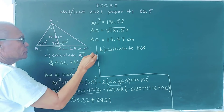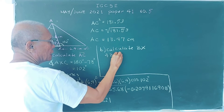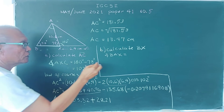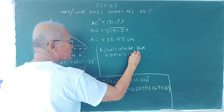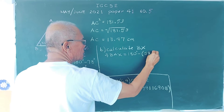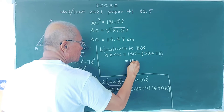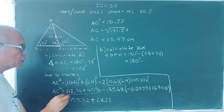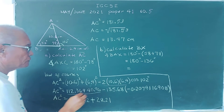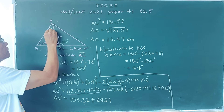To solve for angle BAX, we use the angle sum of a triangle. The angles in triangle ABX sum to 180 degrees. So angle BAX equals 180 minus the sum of 58 and 78 degrees, which is 180 minus 136, giving us angle BAX equal to 44 degrees.